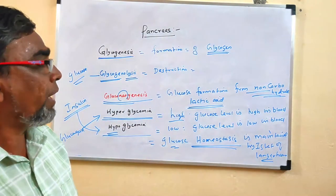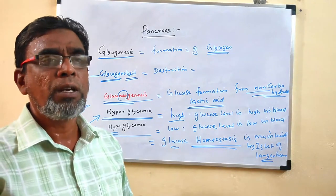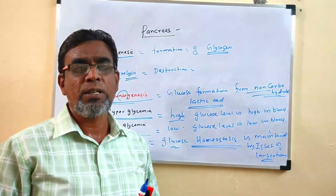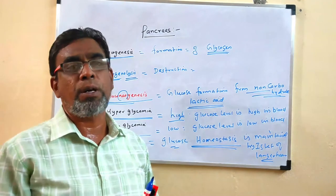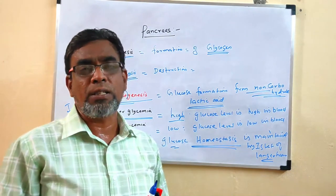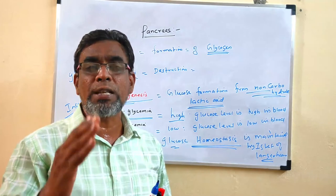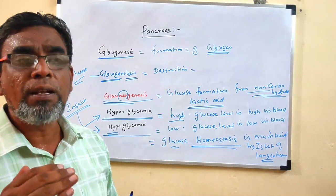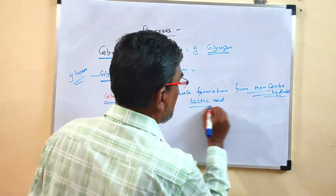In this chapter, we discussed that the pancreas is both an exocrine and endocrine gland — called a heterocrine gland. It is a leaf-like structure below the stomach with two tissue types: acini (exocrine, secreting digestive enzymes) and islets of Langerhans (endocrine, secreting hormones). Islets of Langerhans has alpha cells secreting glucagon, beta cells secreting insulin, and delta cells secreting somatostatin. Somatostatin inhibits secretion of both glucagon and insulin. Insulin decreases glucose level; glucagon increases it — they are antagonistic. Thank you, students.